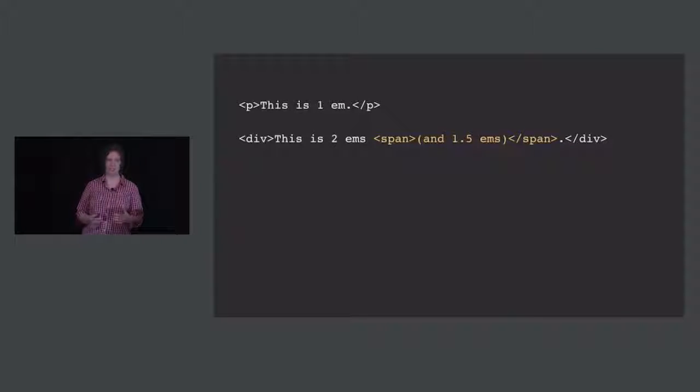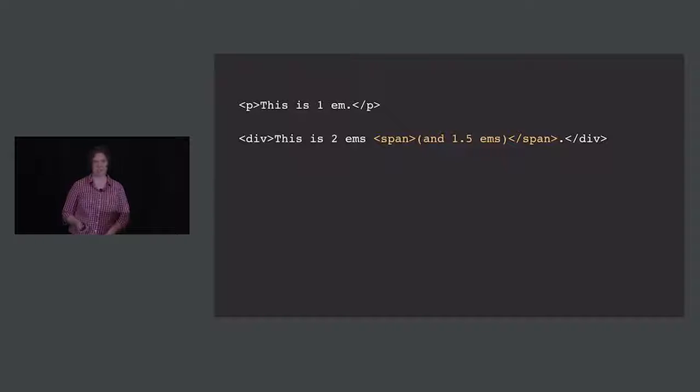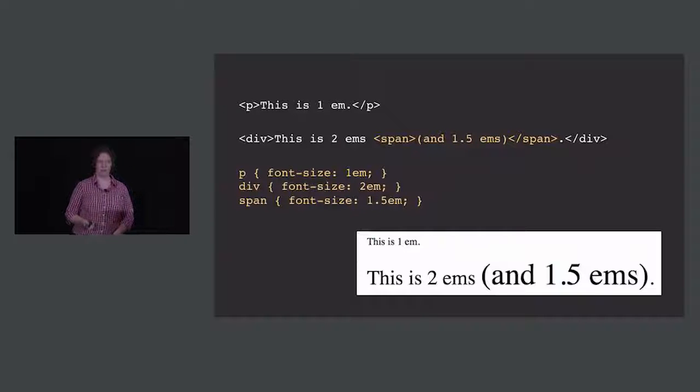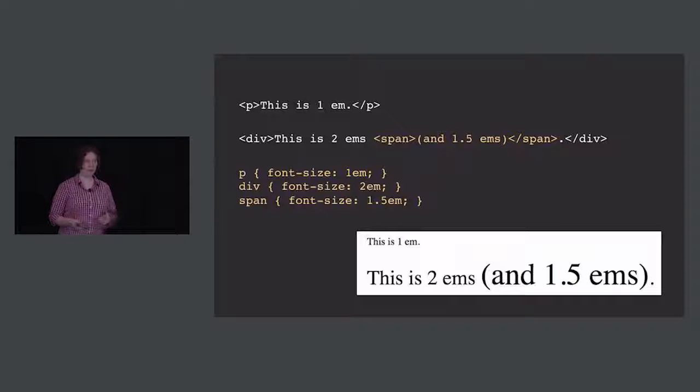The tricky thing about ems that makes them different from rems is that you don't just start out with one default. The font size of every element is calculated in relation to the size of the font in its containing element. For example, a div with a size of two ems and a span inside it with a size of 1.5 ems — that span is actually going to be 1.5 multiplied by two, so it looks like three ems. That does make it tricky. If you put things inside other elements and apply font sizes to many different elements, you can get a lot of weird things happening.